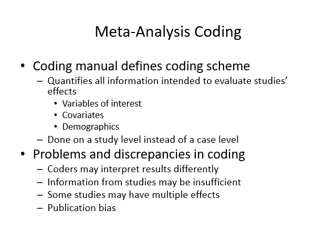Once you determine the criteria for including articles, you need to measure each article — each article represents a data point, like a person we're studying. You need to create a coding manual that defines the coding scheme. If you're reading a meta-analysis, this is where you really want to dig in: how did they create their coding manual, who was looking at these articles, and do you believe the coding truly captured what they're interested in? We're basically trying to quantify all the information needed to evaluate each study's effects, trustworthiness, variables of interest, covariance, and demographics — creating a dataset where instead of measuring individuals, we're measuring studies.